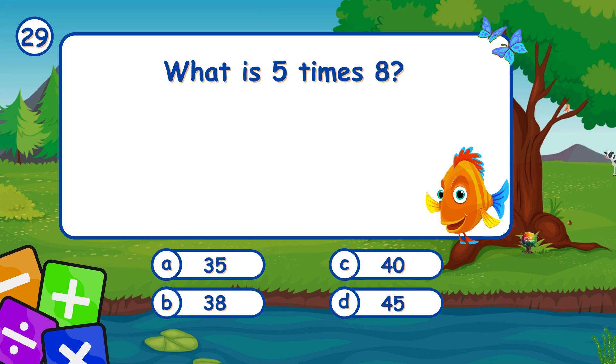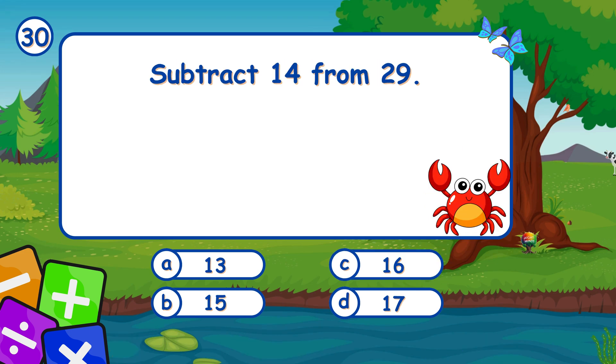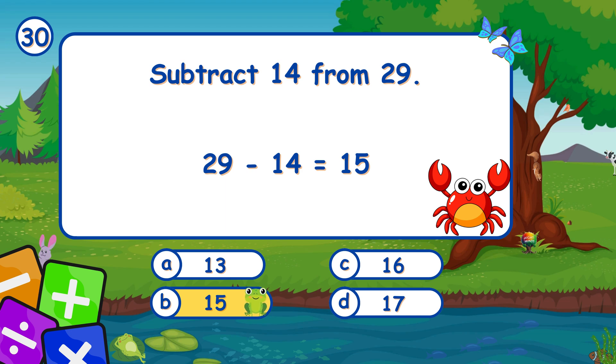What is 5 times 8? It's C, 40. 5 times 8 is 40. Subtract 14 from 29. It's B, 15. Subtracting 14 from 29 leaves 15.